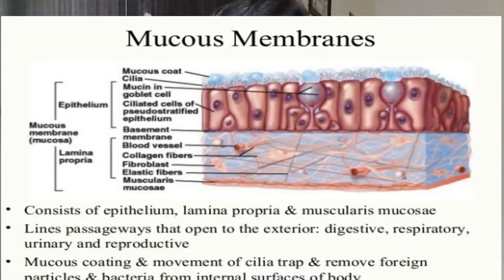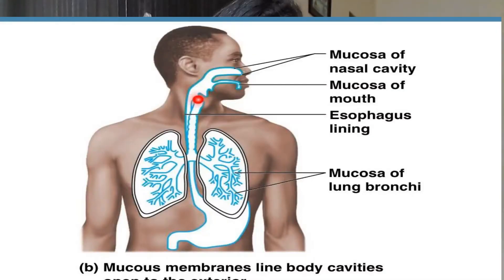Your nose and ear passages are linked with mucus membrane. This is a layer of cells which make a sticky fluid called mucus. The mucus traps germs and dirt in the air you breathe. Tiny hairs called cilia